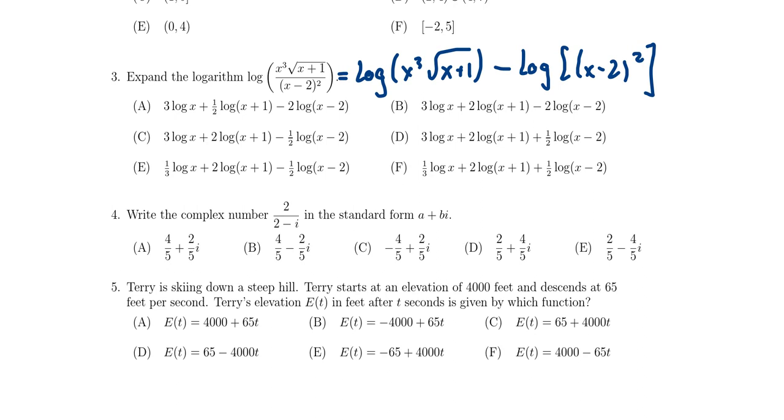In the first logarithm, there is a product going on here. You have x cubed times the square root of x. So we're going to break that up with regard to the product there. So that gives us the log of x cubed plus the log of the square root of x plus 1 then minus the log of x minus 2 squared.